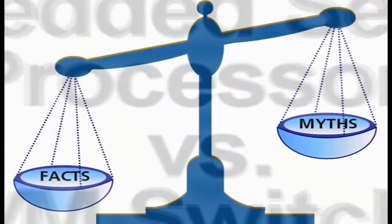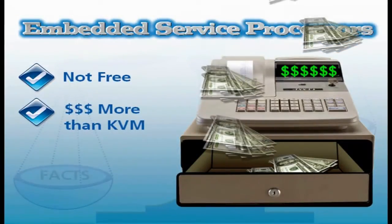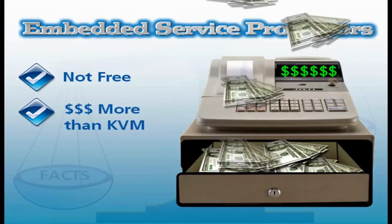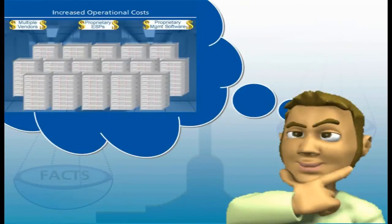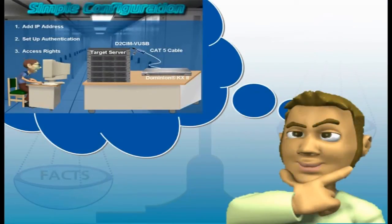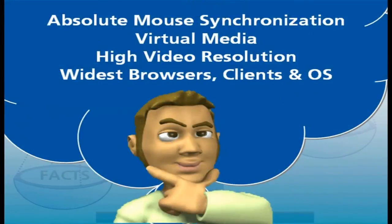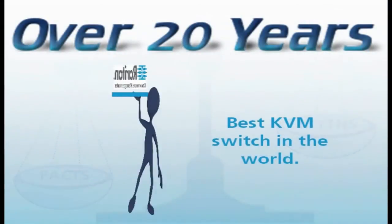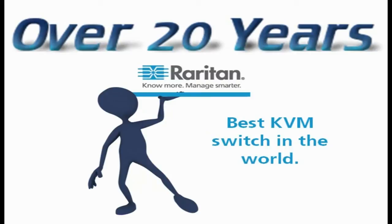The conclusion is now very clear. ESPs are not free, and in many circumstances they can cost more than a fully-featured KVM solution. Data centers rarely include a single vendor's solutions, and managing multiple vendor solutions can be very costly in terms of money and operational headaches. ESP management features less convenience, flexibility, and overall performance than a centralized KVM solution. Raritan's solution is easier to configure and maintain, and it comes with industry-leading features that are constantly being improved upon. Over the past 20 years, Raritan has showed an unparalleled dedication to keep its title as the best KVM switch in the world.